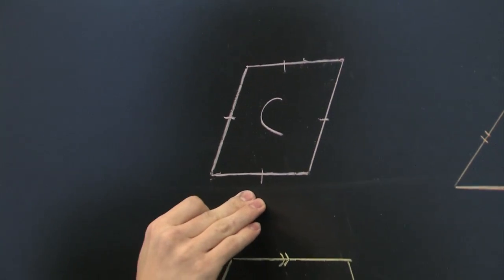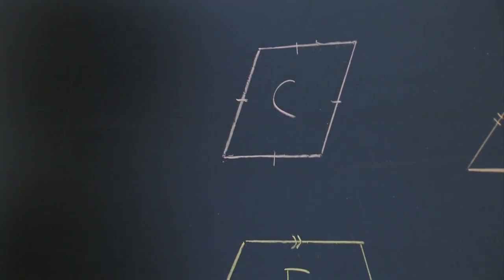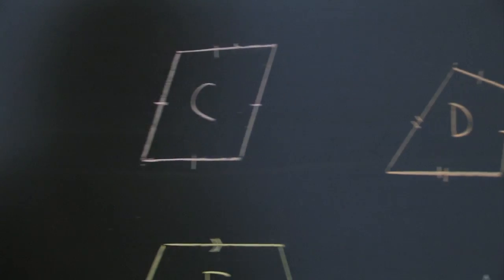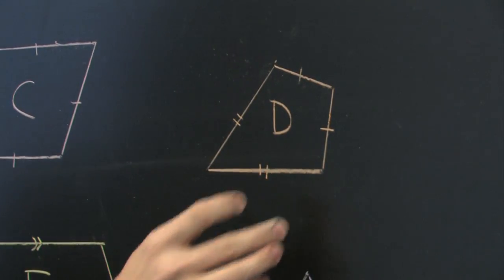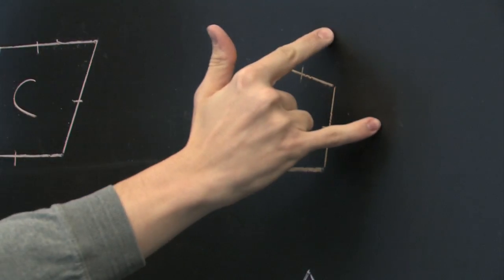We have the rhombus, whose definition is all four sides are of the same length. We have the kite, in which adjacent pairs of sides are of the same length.